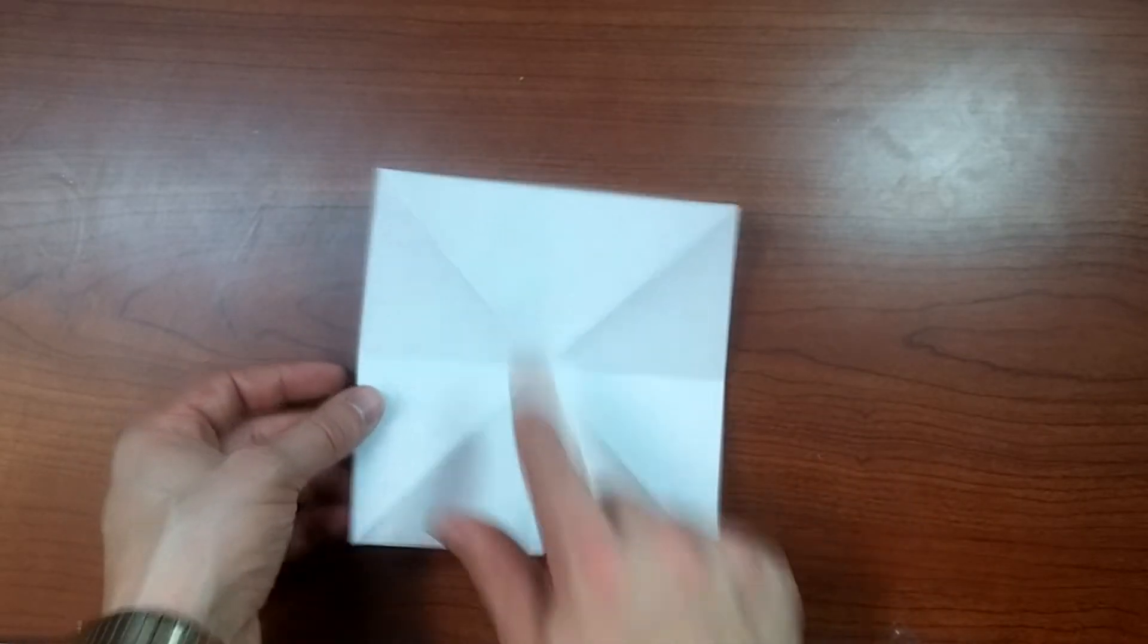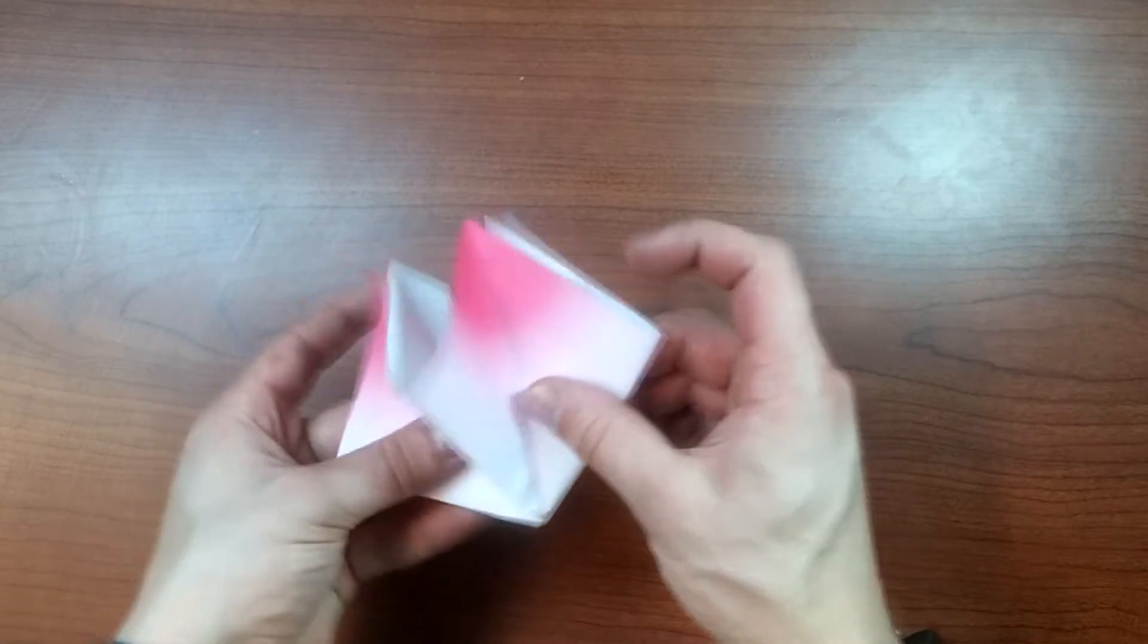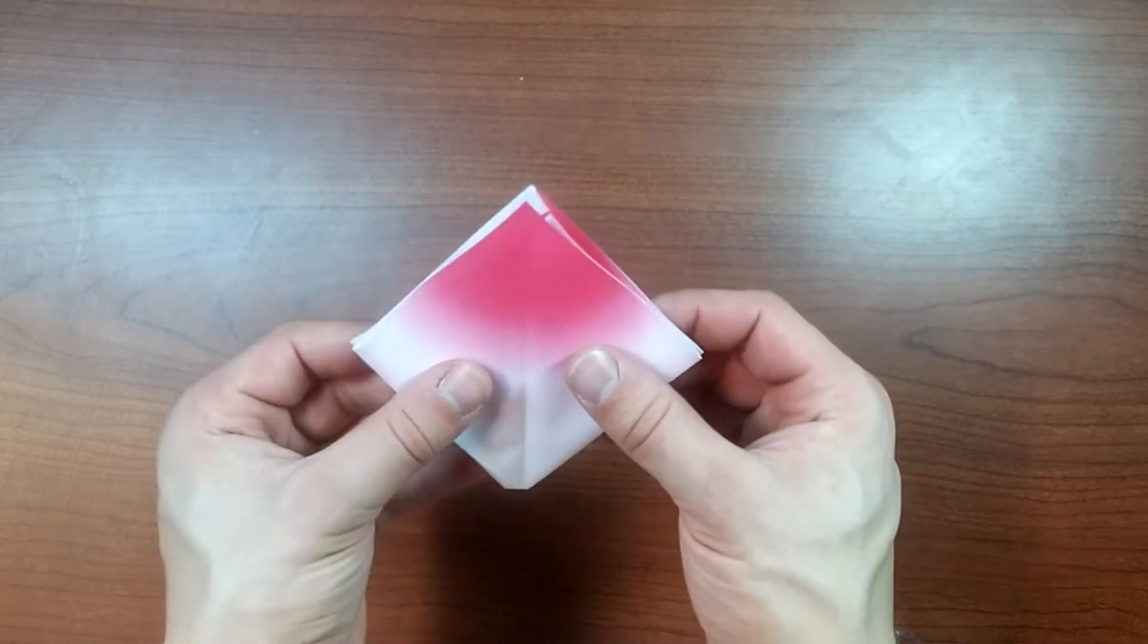Alright next, white side up, push in the center and collapse like this. Two flaps should be on each side.